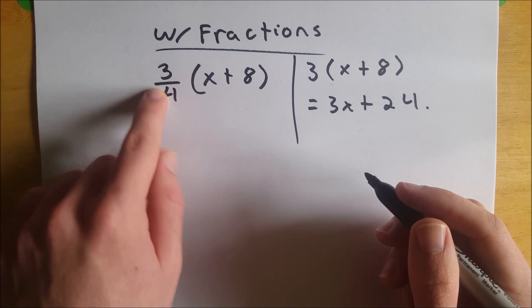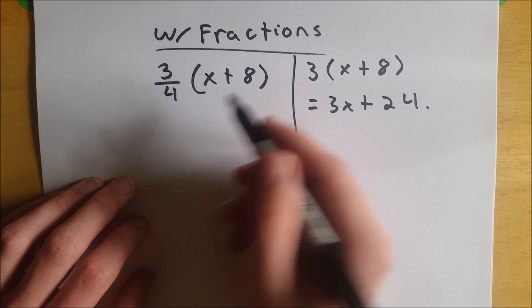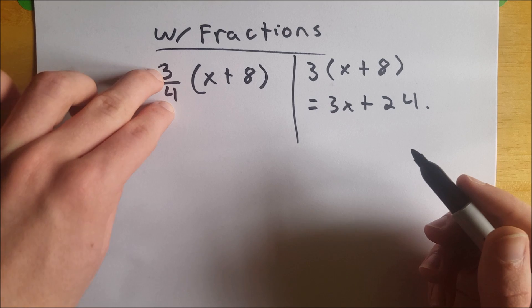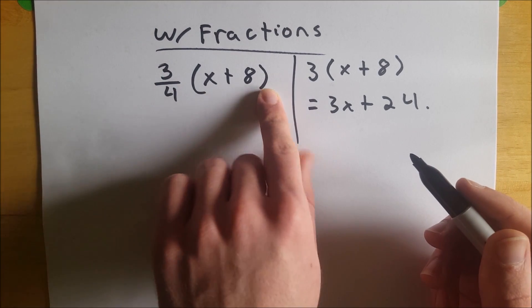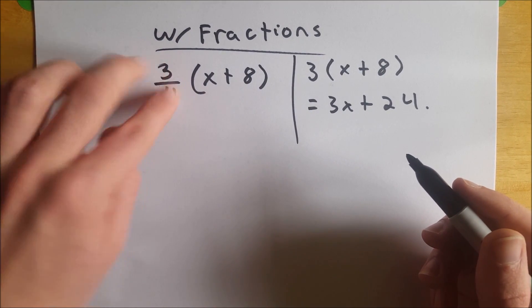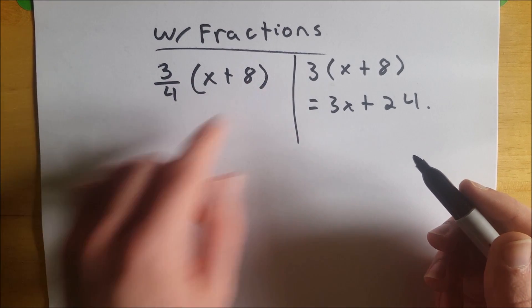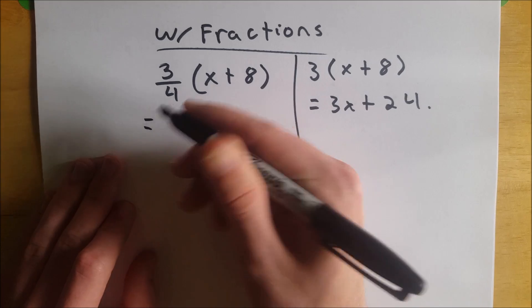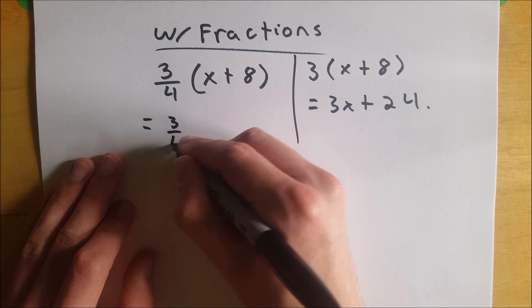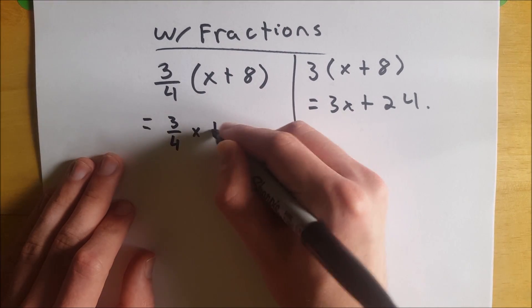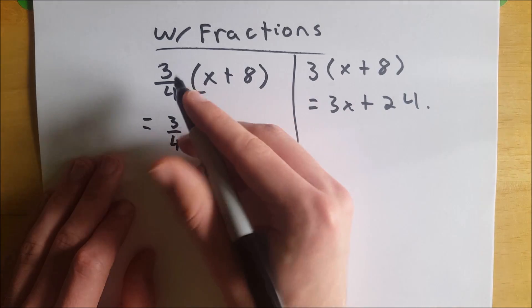Now, if we go over to this side with our scary little fraction, it's the same exact thing. We just have to multiply 3/4 throughout the parentheses. So we would do 3/4 times x plus 3/4 times 8. So this is equal to 3/4 times x plus 3/4 times 8.